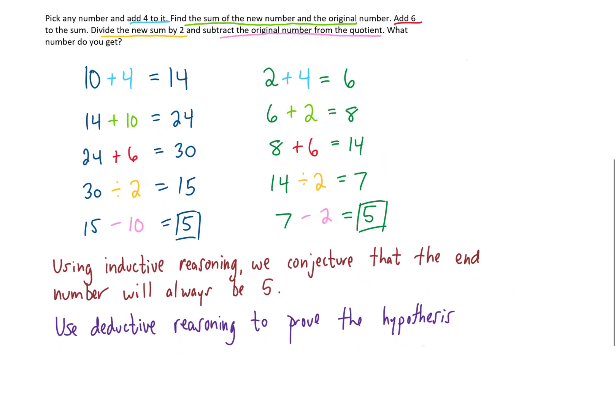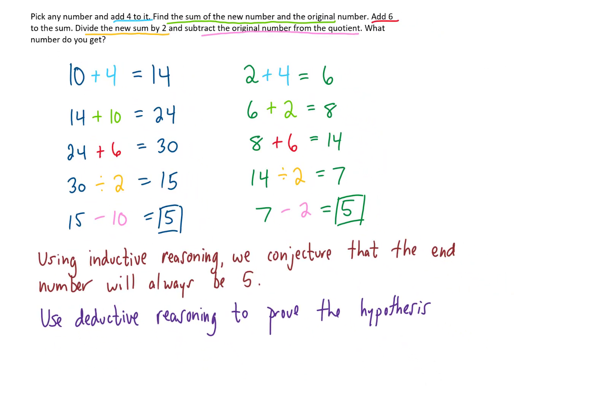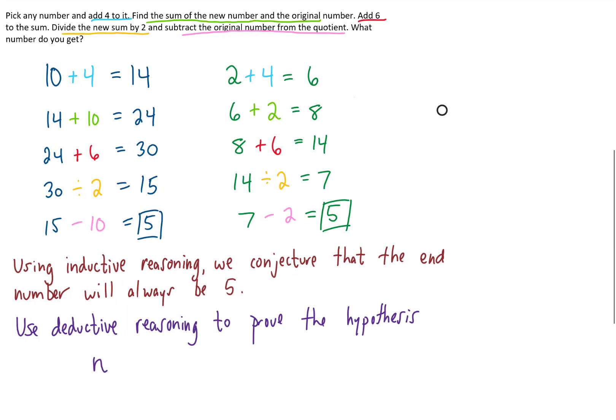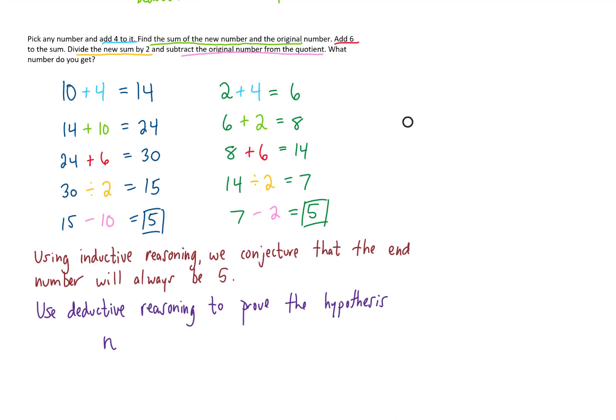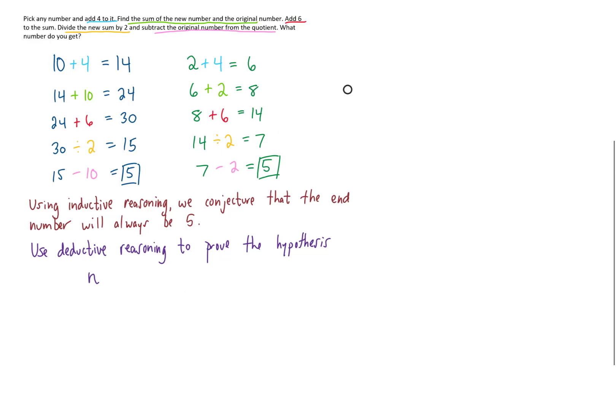And to do that, instead of starting this process with a specific number, we're going to start the process with a general number. Let's just call that number n. Now I'm going to go through this whole process using n as my original number.